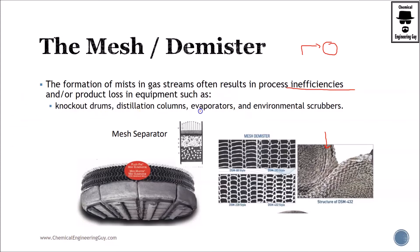Knockout drums, distillation columns, evaporators, and environmental scrubbers will typically have demisters or mesh in their applications. We call flash drums also knockout because the flash is very quick—it literally knocks out the liquid from the vapor. Here we have a plate pack and a mist extractor.